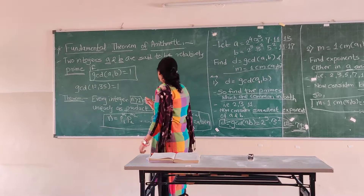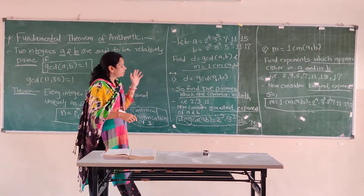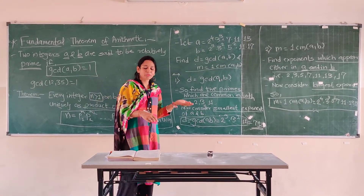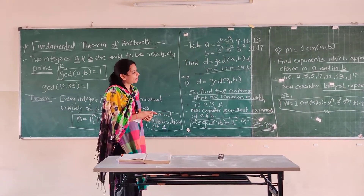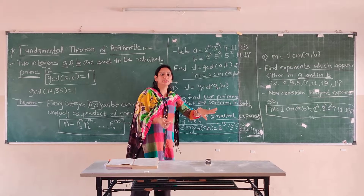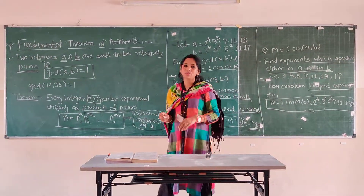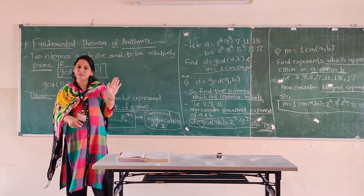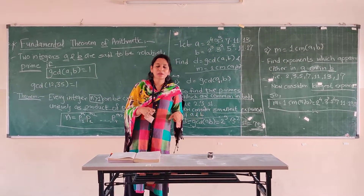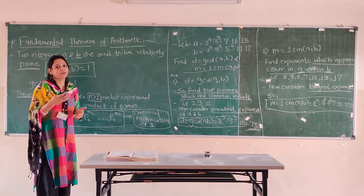To summarize: the Fundamental Theorem of Arithmetic finds GCD by identifying common primes and taking their smallest exponents, and finds LCM by taking all primes in a or b with their largest exponents. In our next section we will start basic counting principles, beginning with the principle of inclusion and exclusion.